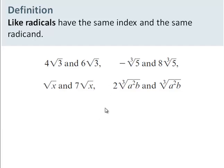Like radicals, this is an important part of this section. The idea of a like radical is sort of like like terms, and they have the same index and the same radicand. Index is this, you're taking it to which power, and the radicand is the number underneath the radical sign. So 3 and 3 are the same, 5 and 5 are the same, x and x are the same, and a squared b and a squared b are the same.